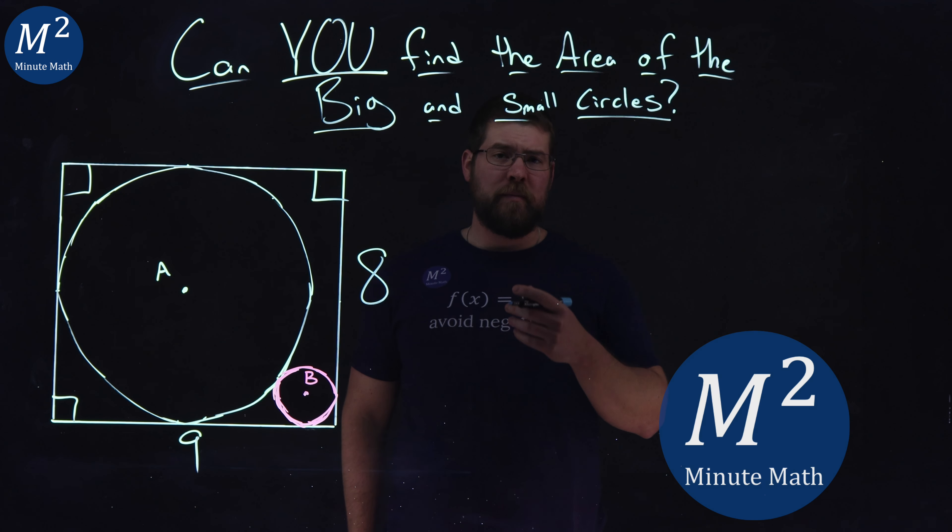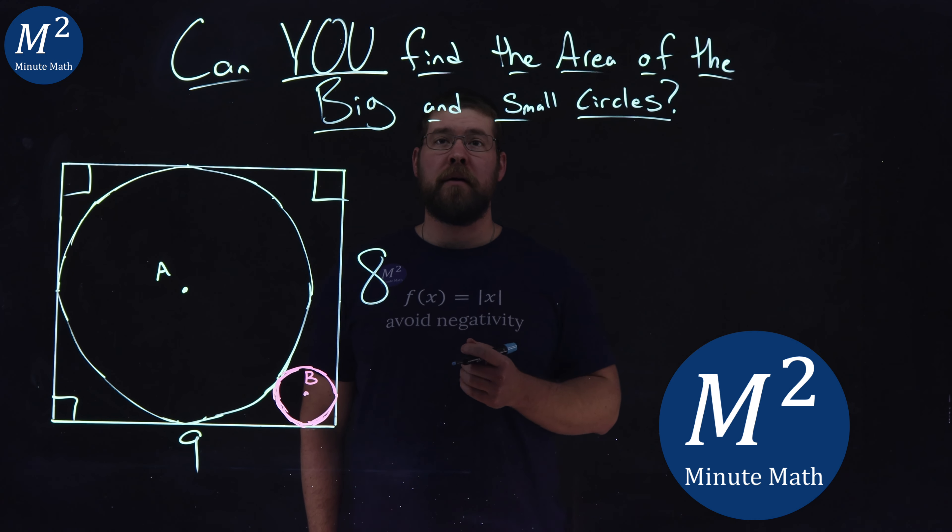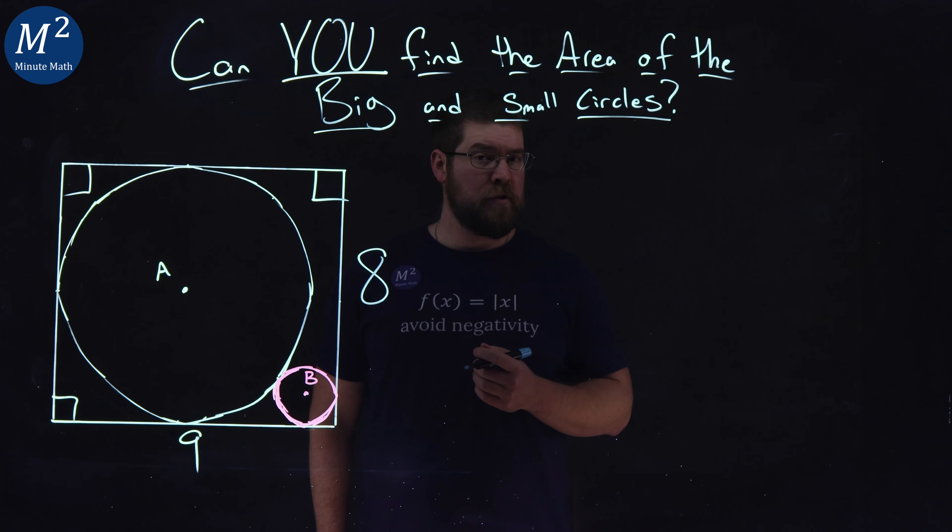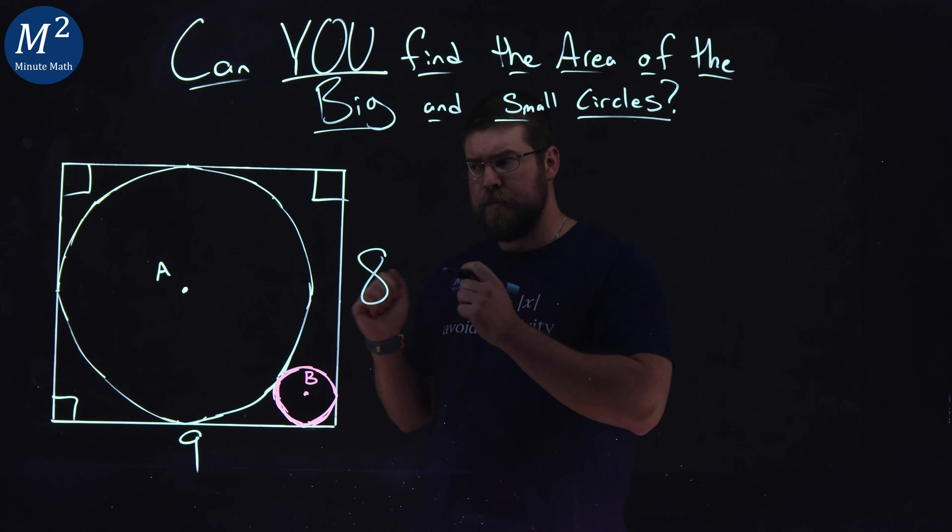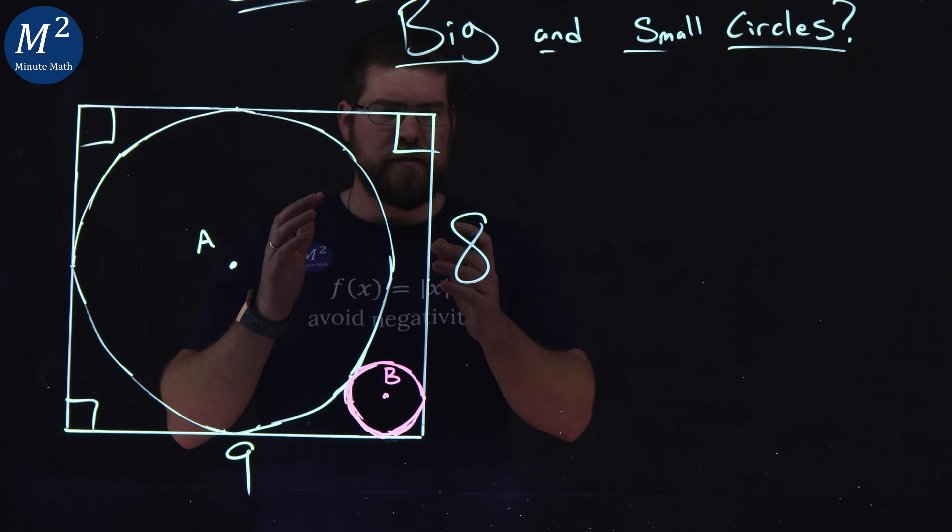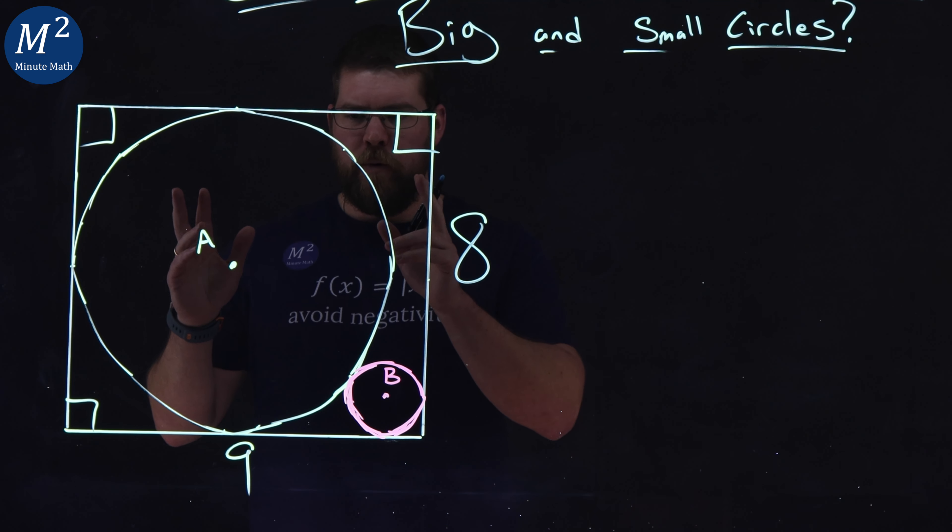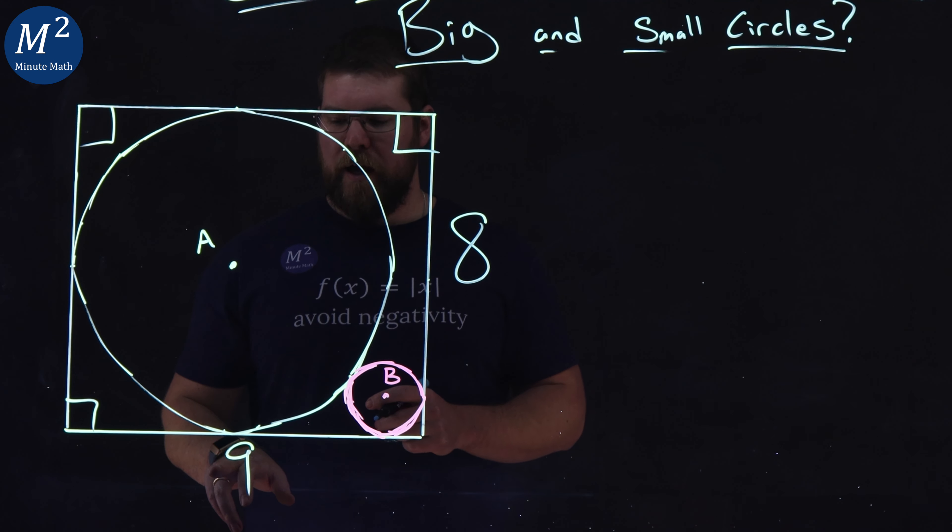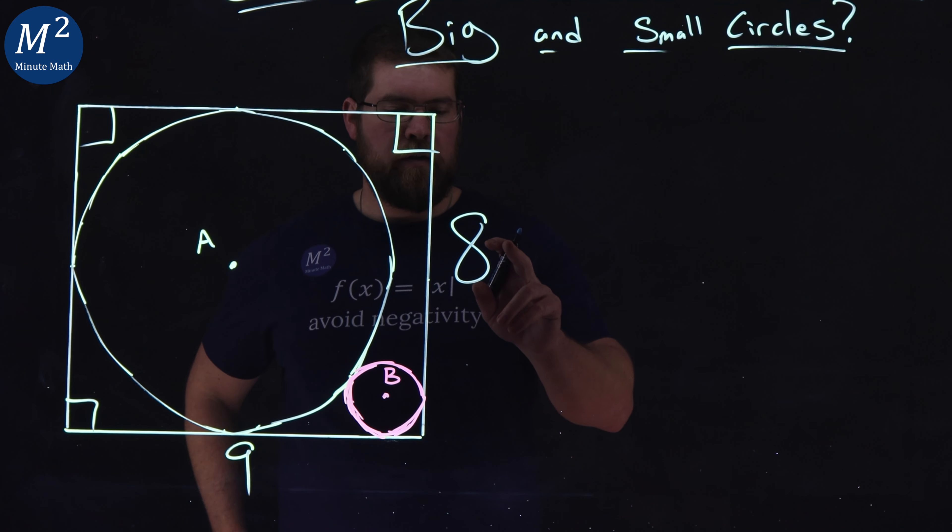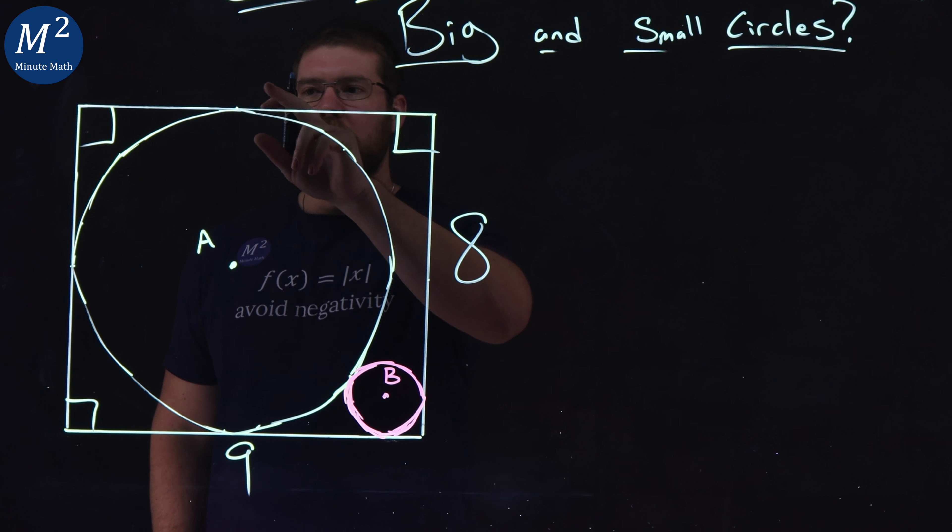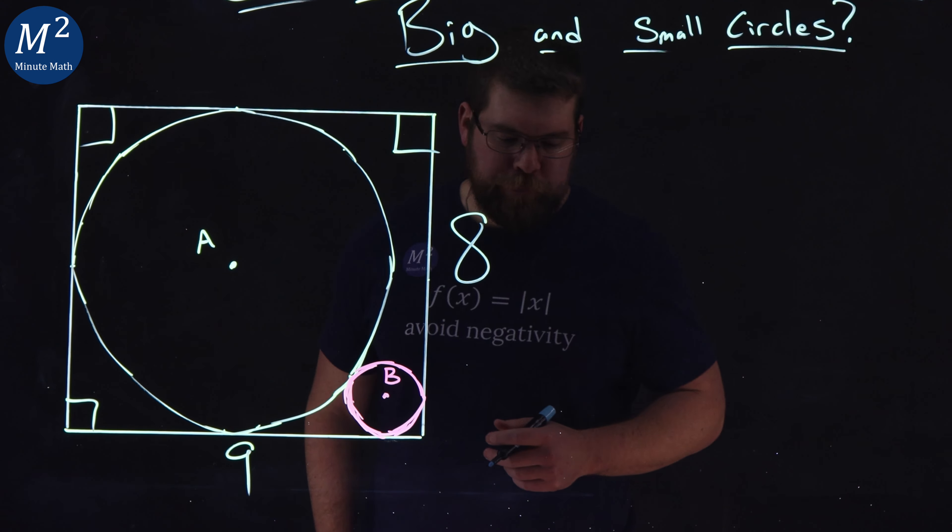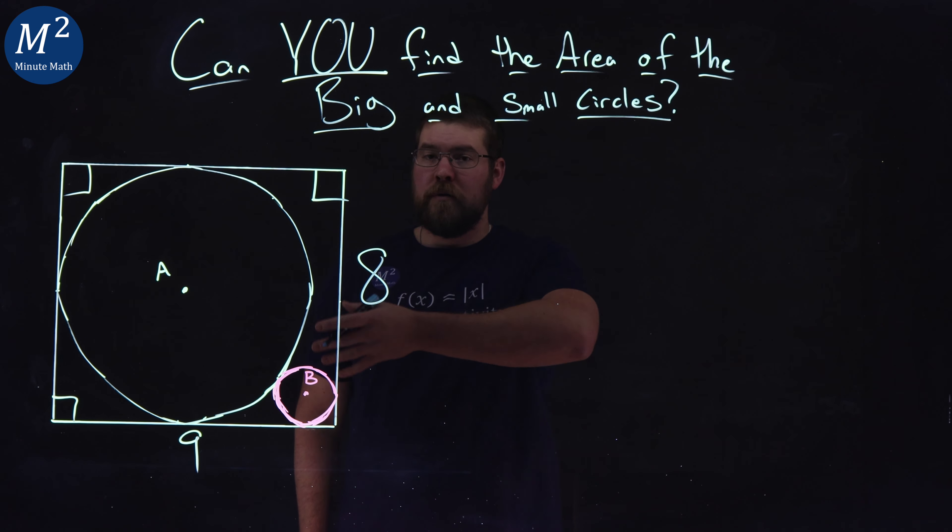Hi, I'm Sean Gannon and this is MinuteMath, and can you find the area of the big and small circles? We have a figure here with two circles within them, a large one and a small one. We have a rectangle going on here with one side length of nine and the other is eight. Our two circles touch right here and they have tangent points along the rectangle.